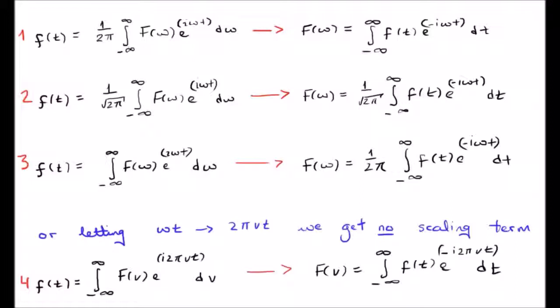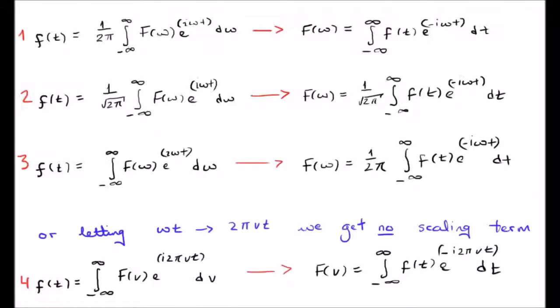In the forward transform we begin with a function in the time domain, and the transform converts it to a function in the frequency domain, using cosines and sines as the basis functions. The physical interpretation is that we are decomposing our signal or function into its frequency components, and we speak of F of omega as living in the Fourier or frequency domain.